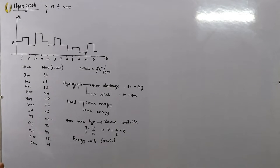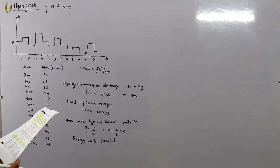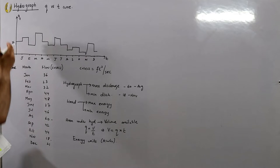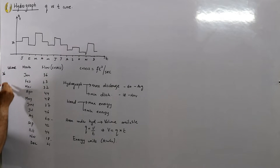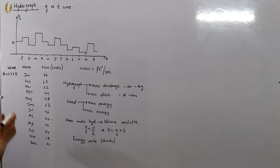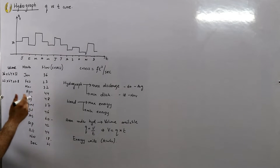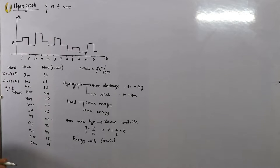So from this data, Q_max is 60 and Q_min is 18. The volume for each month is calculated as V = Q × t. For January: V = 36 × 24 × 31 × 3600 (converting to seconds). For February: V = 23 × 24 × 28 × 3600. The time must be in seconds because discharge is in cubic feet per second.